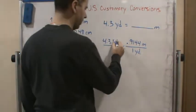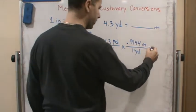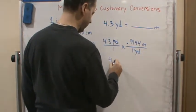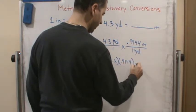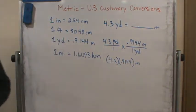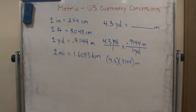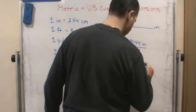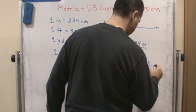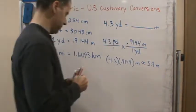And so again we end up with meters, and so we just multiply. So it's just going to be 4.3 times 0.9144 meters. And so we get approximately 3.93 meters, or 3.9 if we round. So this is going to be approximately 3.9 meters.